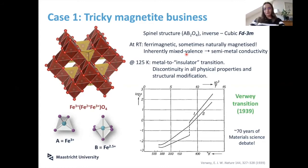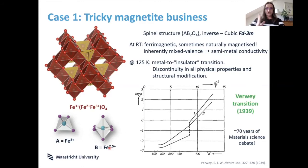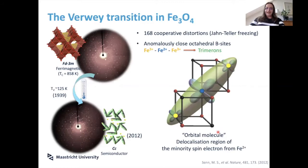The conductivity drops in a very nice first-order transition. I put 'insulator' in quotes because someone might be picky — semi-metal to semiconductor is actually more accurate. The original idea was that something must have happened to the charges: the conductivity comes from this little extra electron differentiating a 2+ from a 3+ hopping around. If you separate Fe²⁺ and Fe³⁺ in the octahedral framework, you possibly stop the conductivity. The real answer came only in 2012.